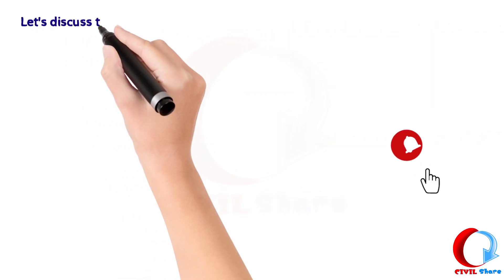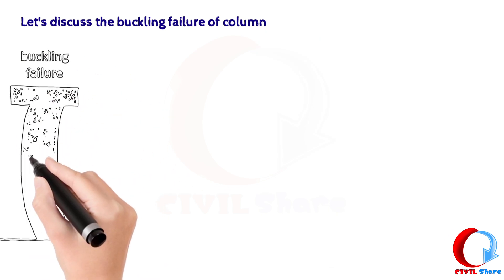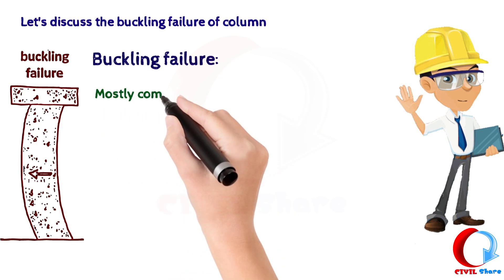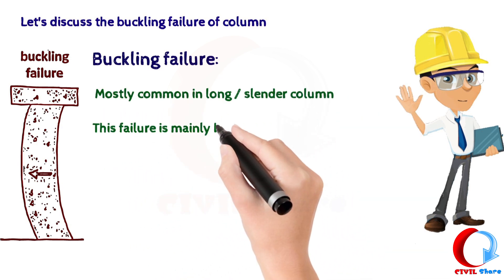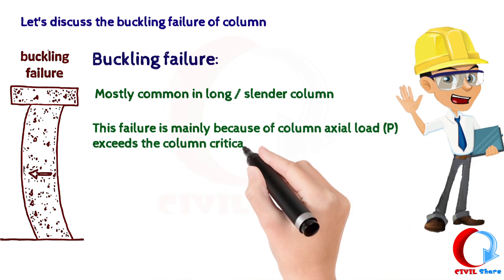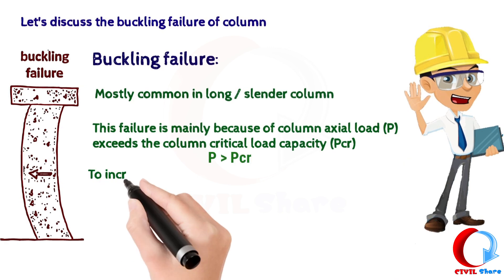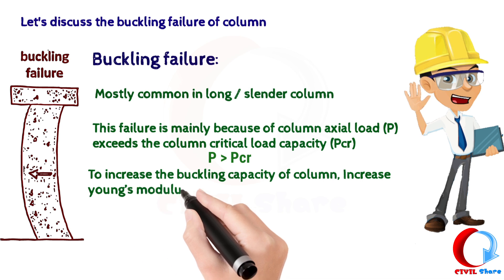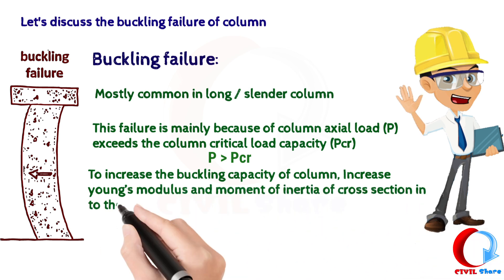Let's discuss the Buckling Failure of a column. Buckling failure is mostly common in long or slender columns. This failure is mainly because the column axial load, P, exceeds the column critical load capacity, PCR. To increase the buckling capacity of a column, increase Young's modulus and moment of inertia of the cross section, as shown in the formula below.